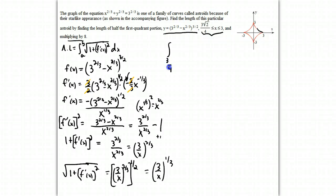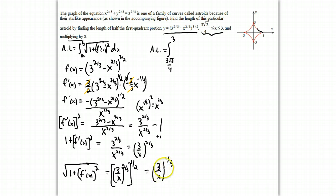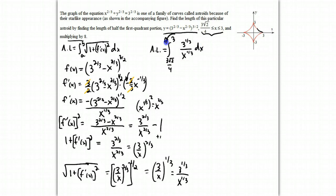We integrate from 3√2/4 to 3. Instead of writing it as (3/x)^(1/3) — which might make us think of a natural log — we write it as 3^(1/3) over x^(1/3). Written that way, we can see it's not a log at all. We pull the constant 3^(1/3) outside and treat x^(1/3) in the denominator as x^(-1/3) when integrating.